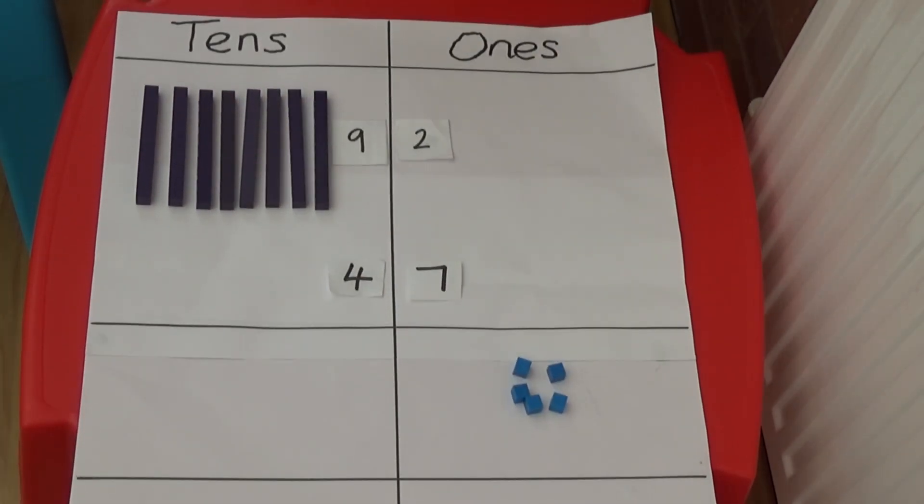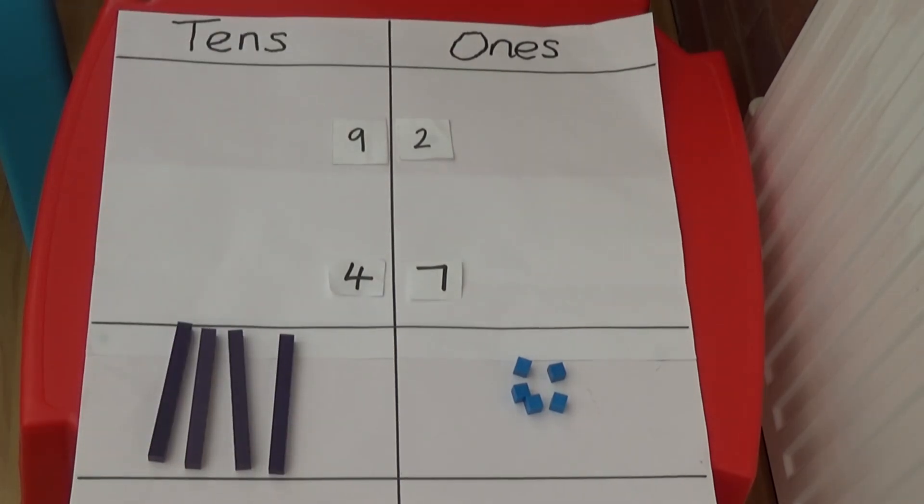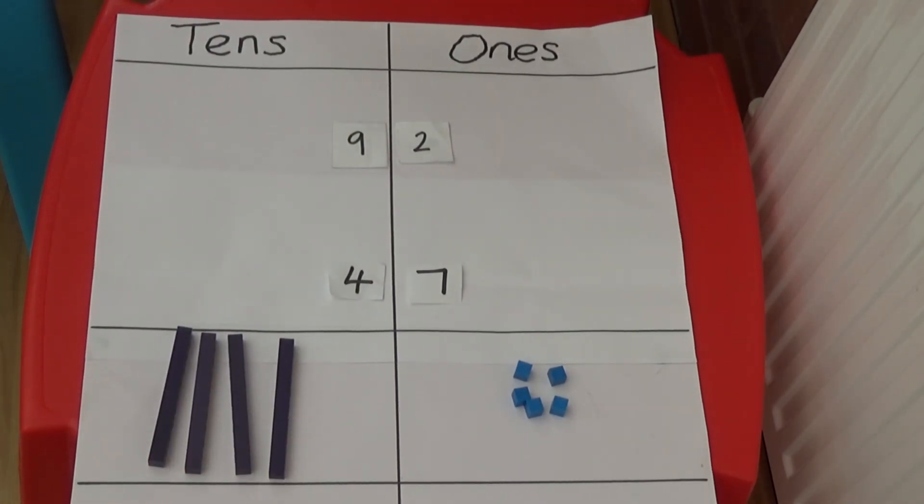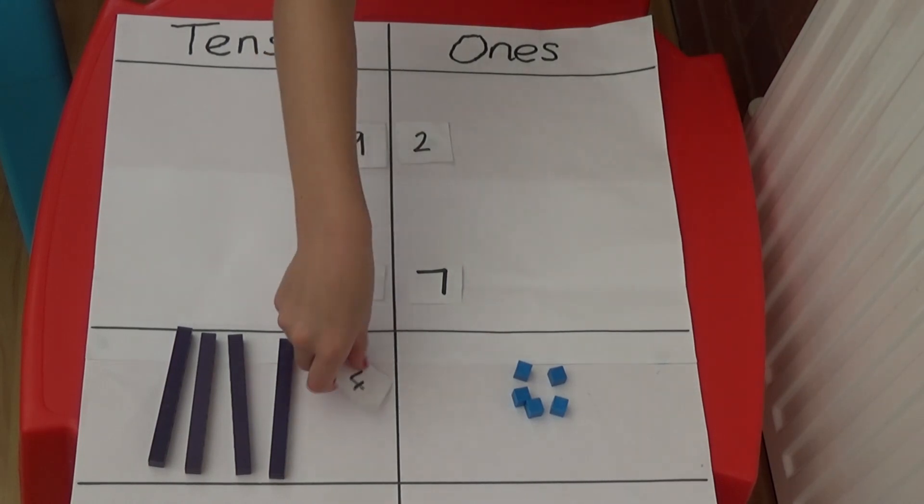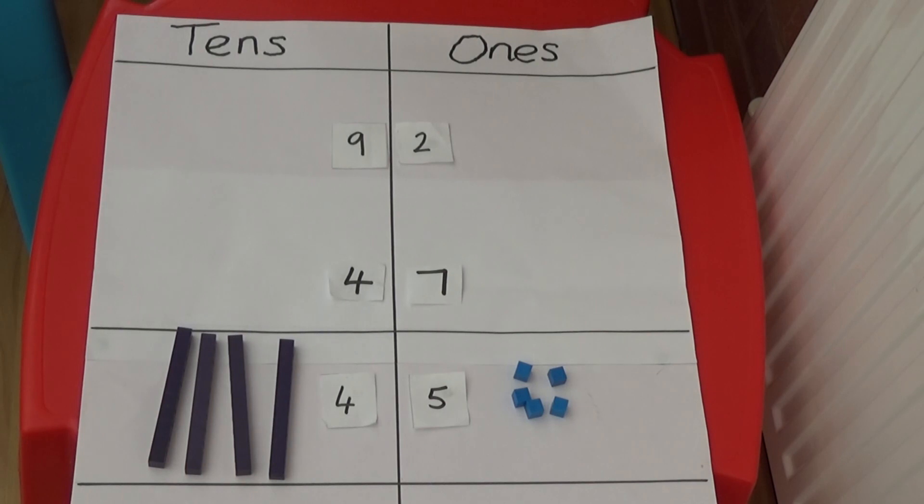I then need to subtract the tens, 8 tens minus 4 tens equals 4 tens. So 92 minus 47 is 4 tens and 5 ones which is 45.